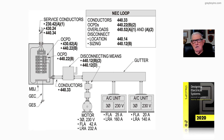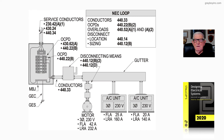It's a three-phase 230-volt motor. The FLA running current could be up to 42 amps, and the locked rotor current would be 232. For the AC units: the first has an FLA of 25 and LRA of 160; the second has an FLA of 20 and LRA of 140.